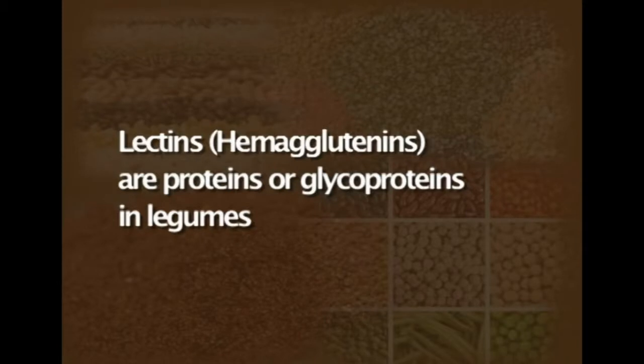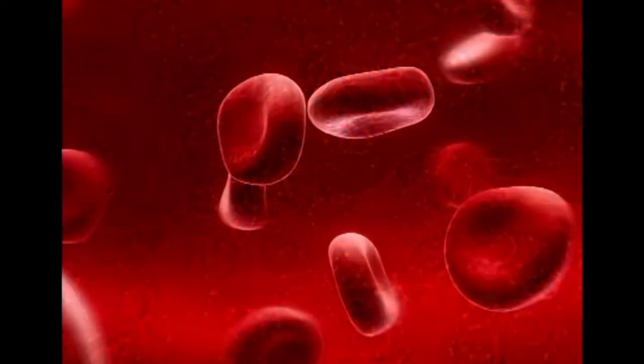Hemagglutinins are also proteinaceous in nature and interfere with the digestion of certain products in the gut, and also lead to agglutination of red blood corpuscles. They are found in about 800 varieties of legumes and pulses. Saponins are glycosides in nature; when eaten, they have a bitter taste and form foams with solution. In water they give a soapy effect, and basically they cause hemolysis of red blood cells.